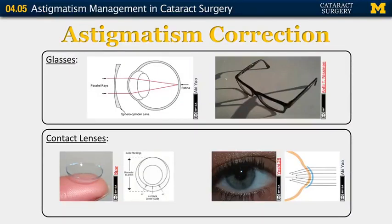Regardless of the type of astigmatism, the general corrections we use are either glasses, which work best for regular astigmatism, or contact lenses — either soft or rigid gas permeable — that will work for both regular or irregular astigmatism, especially rigid gas permeable lenses, which work best for irregularities of the cornea.